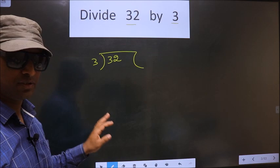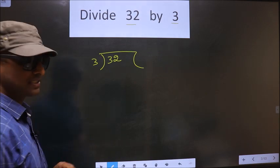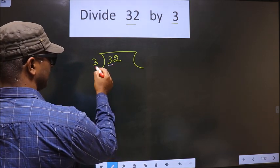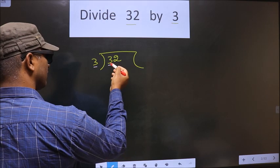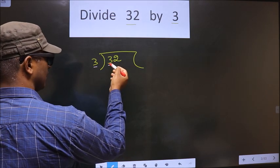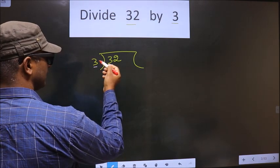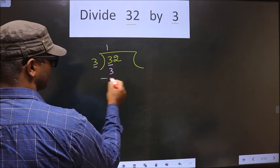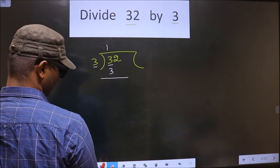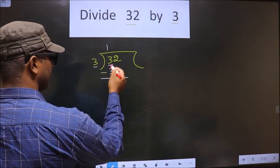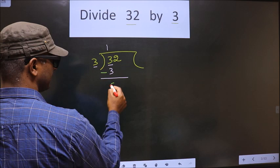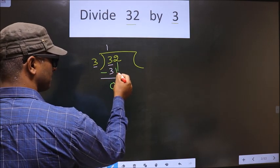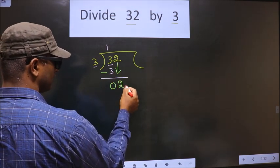Okay, as usual. Now here we have 3, here we have 3. When do I get 3 in the 3 table? 3 once is 3. So now you subtract, here you get 0. Now you bring this number down, you get 2.